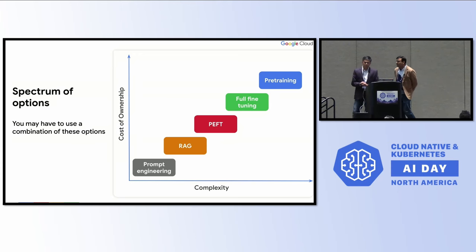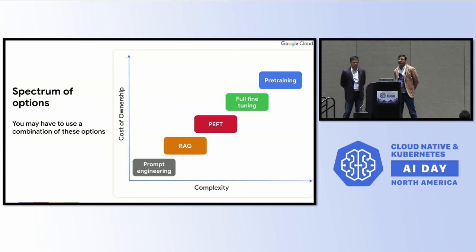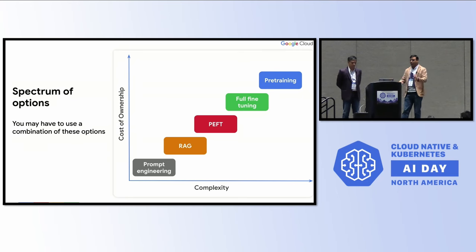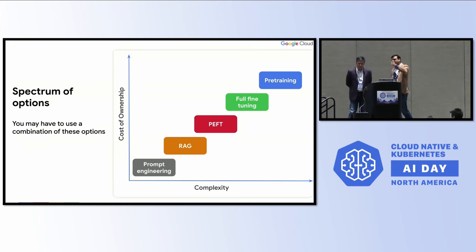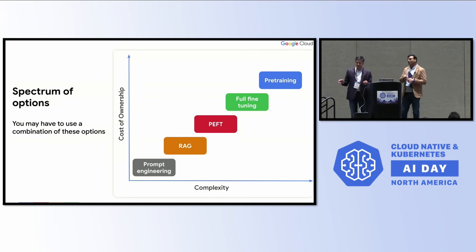If you use RAG for a chatbot solution, you won't be spending much money. But if you start fine tuning your model completely from scratch, you not only add complexity, you'll also be adding a lot of cost in terms of GPUs, TPUs, manpower, and cloud solutions. Prompt engineering is easy to use; pre-training an entire model means spending a lot of money with a lot of complexity. The question is whether RAG has been better in terms of accuracy compared to supervised fine tuning.